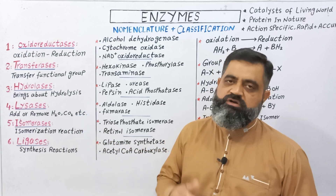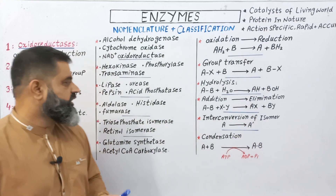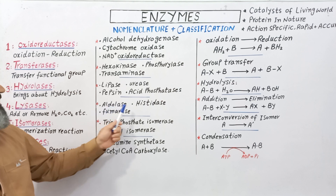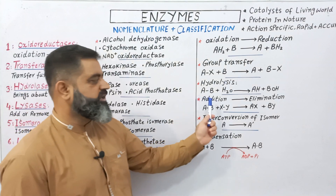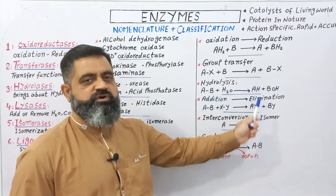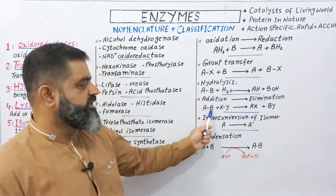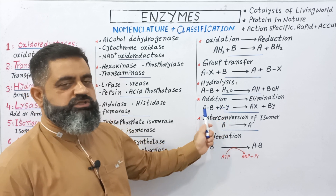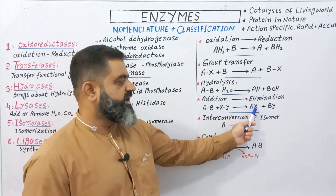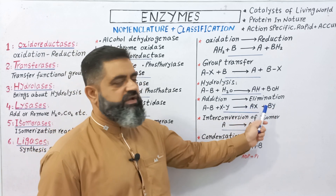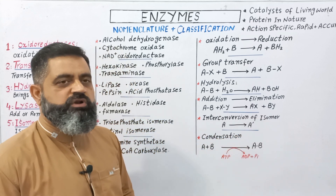The next category is lyases. These are enzymes which add or remove water, CO2, or other molecules. Examples include aldolase, histidase, and fumarase. How they work: they perform addition and elimination. A molecule A–B and another molecule X–Y exchange parts with each other — A gains X and B gains Y — resulting in A–X and B–Y through addition and removal of parts of the molecules.